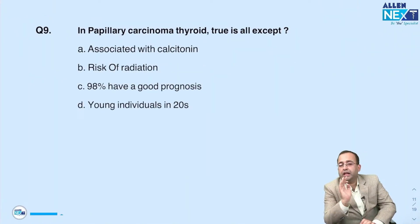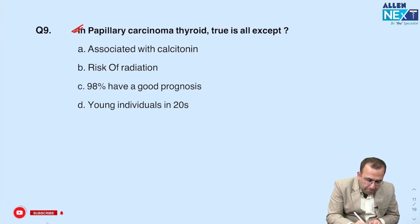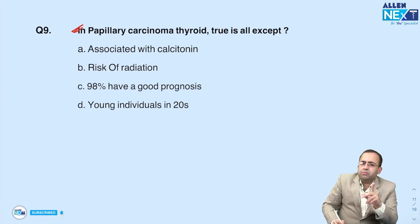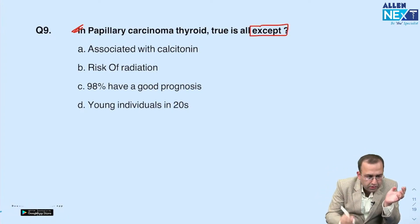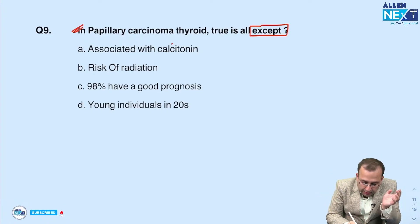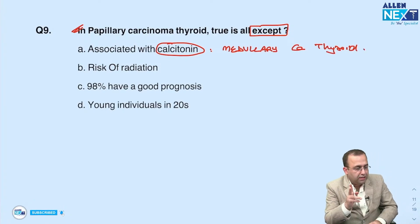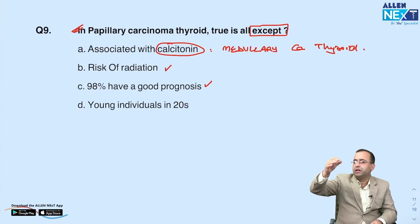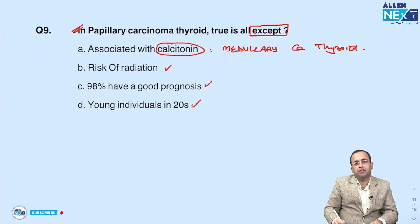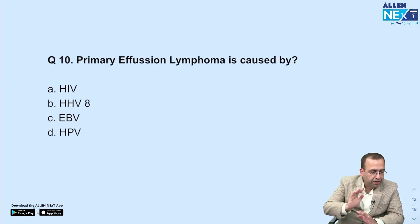A slightly tricky question asked twice in the same paper: papillary carcinoma of the thyroid. We already know about orphan Annie nuclei and psammoma bodies. The question was 'true is all except' — and the answer: calcitonin is NOT a tumor marker of papillary carcinoma thyroid. Calcitonin is a tumor marker of medullary carcinoma thyroid. Papillary carcinoma is associated with radiation risk, has good prognosis, is the most common thyroid cancer, and is seen in young individuals.